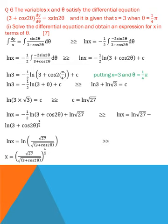So ln of x equals minus 1 over 2 times ln of (3 plus cos 2θ) plus c. In order to find the value of c, we apply the values x equals 3 and θ equals π over 4. In this way we get the final value of c equals ln 3 plus ln of the square root of 3. Applying the logarithmic rule, we write c equals ln of 3 multiplied by the square root of 3, hence c equals ln of the cube root of 27.